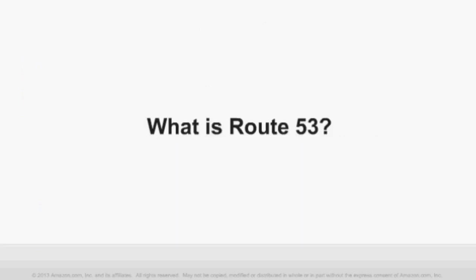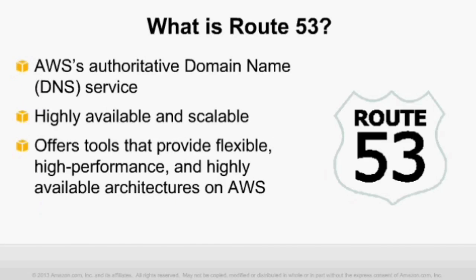What is Route 53 for those new to the service? Route 53 is AWS's DNS service. We consider DNS a Tier 0 service — DNS needs to be up and running for your application or website to be reachable by end users, so we take availability extremely seriously. We offer a 100% SLA for Route 53. The service is built to be highly available and scalable, and DNS Failover is one more tool that allows you to architect your application to be that much more reliable.